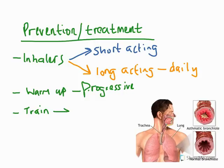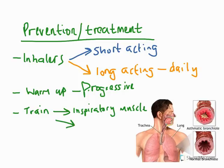Thirdly, we can train a specific part of our body — the inspiratory muscles. Our bronchi may be constricted, but because our diaphragm and external intercostal muscles are stronger, we can still bring in the same amount of air and therefore oxygen. This is called IMT — Inspiratory Muscle Training. These often come in the form of mouthpieces used while exercising, which forces you to breathe harder and increases the strength of those respiratory muscles.